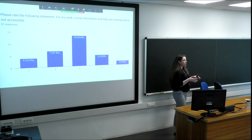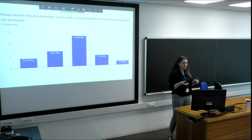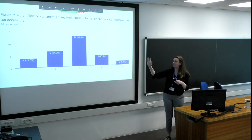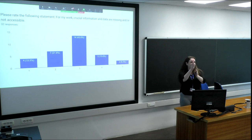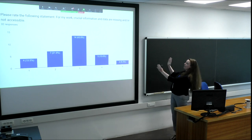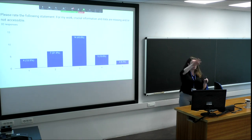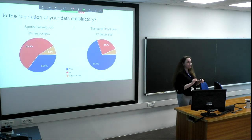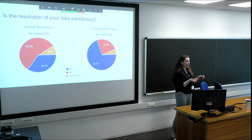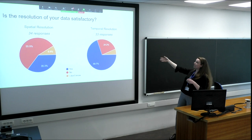When asked whether crucial data is missing, the responses showed a sort of normal distribution. Some people feel they have the data they need to do their research, while the middle half said their work would be so much better if they had additional data, and those on the right end said they're really struggling and need specific information. On resolution, many more respondents said that spatial resolution is not satisfactory for what they really want to do in their work and research. When asked about variables they'd want to use but can't, over 50% said yes — there is more data they'd want to work with.